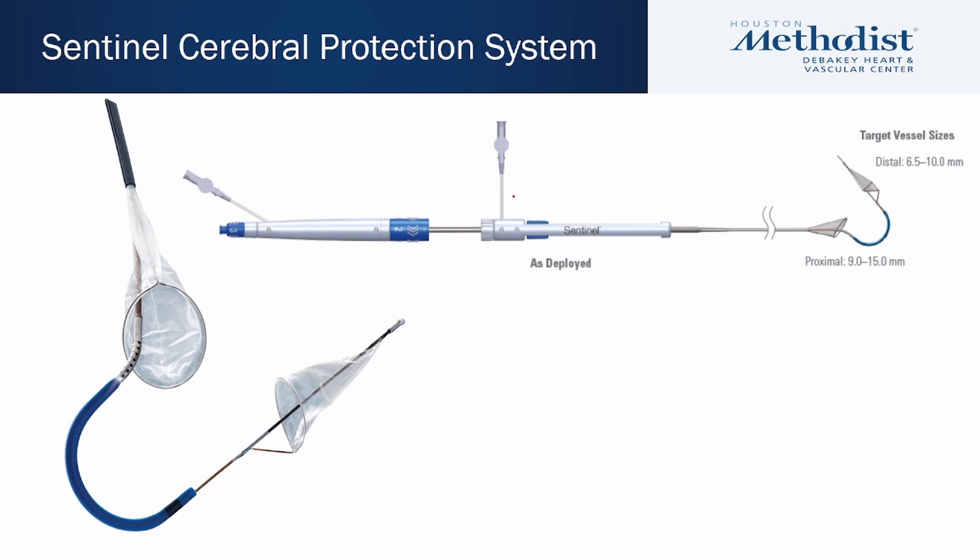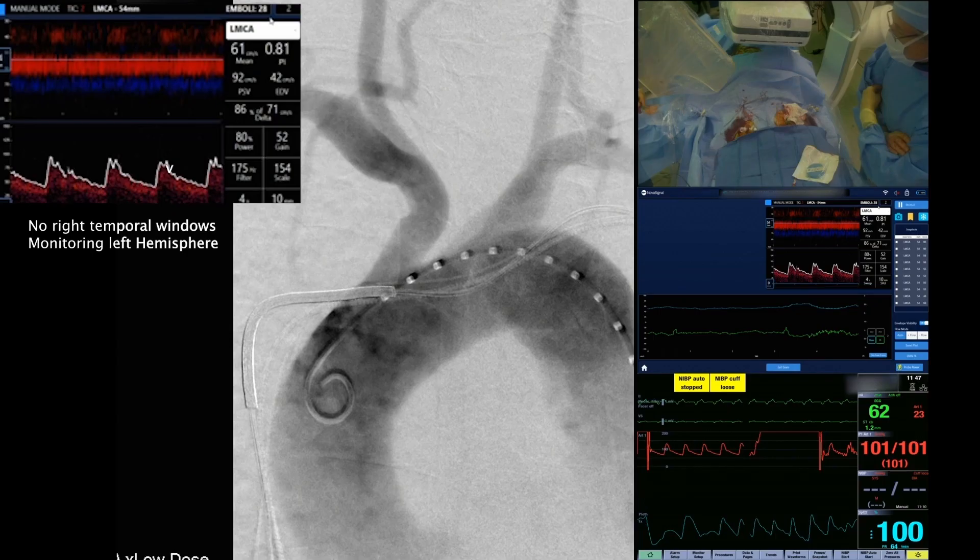The device also has three knobs. The first knob is used to deploy the proximal filter. The second knob helps with antiflexion or retroflexion of the distal edge of the catheter, and the third knob is used to deploy the distal filter.